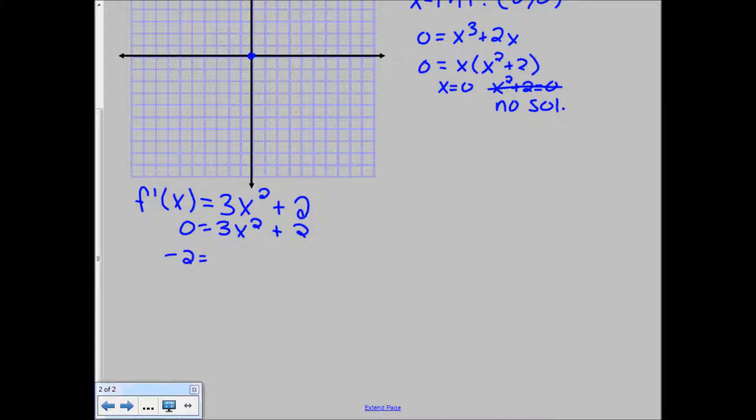Or negative 2 is equal to 3x squared, which would mean that negative 2 thirds is equal to x squared, which again is going to have no solution because we can never have x squared equaling a negative number. Nothing squared is ever going to equal a negative number unless you're working with the imaginary numbers, which we don't do that in this sort of calculus class. So we have no extrema.